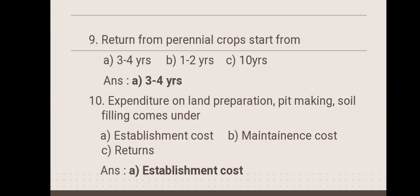Next: returns from perennial crops start from — 3 to 4 years, 1 to 2 years, or 10 years? The answer is 3 to 4 years. Next: expenditure on land preparation, pit making, and soil filling comes under which cost? Establishment cost, maintenance cost, or returns? The answer is establishment cost.